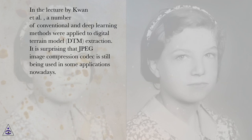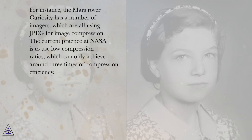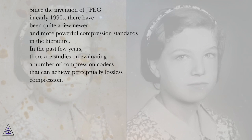It is surprising that JPEG image compression codec is still being used in some applications today. For instance, the Mars rover Curiosity uses JPEG for image compression, with NASA currently using low compression ratios achieving only around 3× compression efficiency. Since the invention of JPEG in the early 1990s, there have been newer and more powerful compression standards. Studies show it is feasible to attain 10-to-1 compression with almost no loss of image quality.